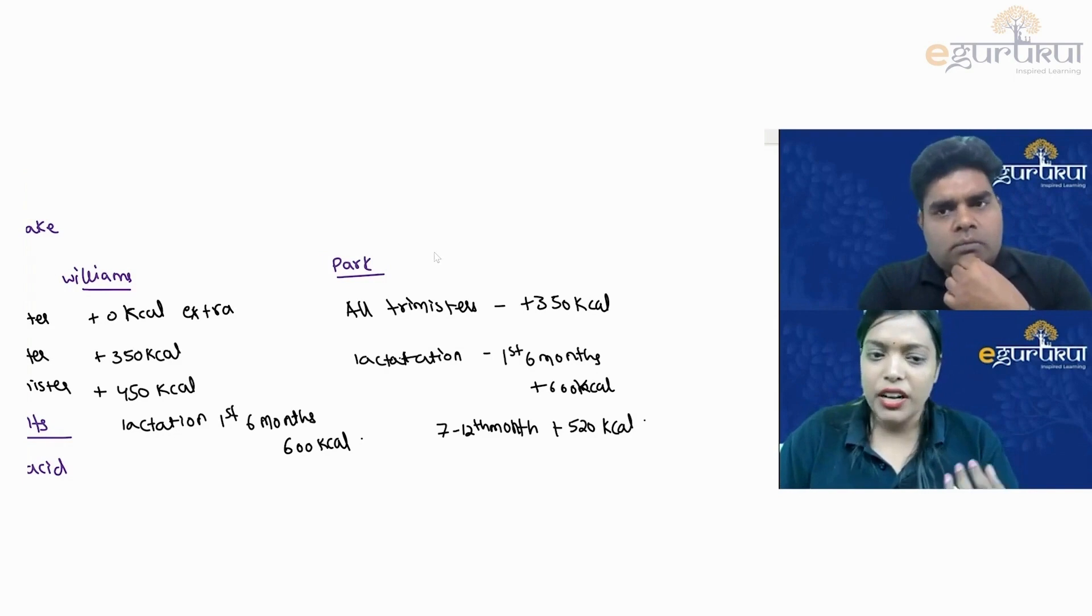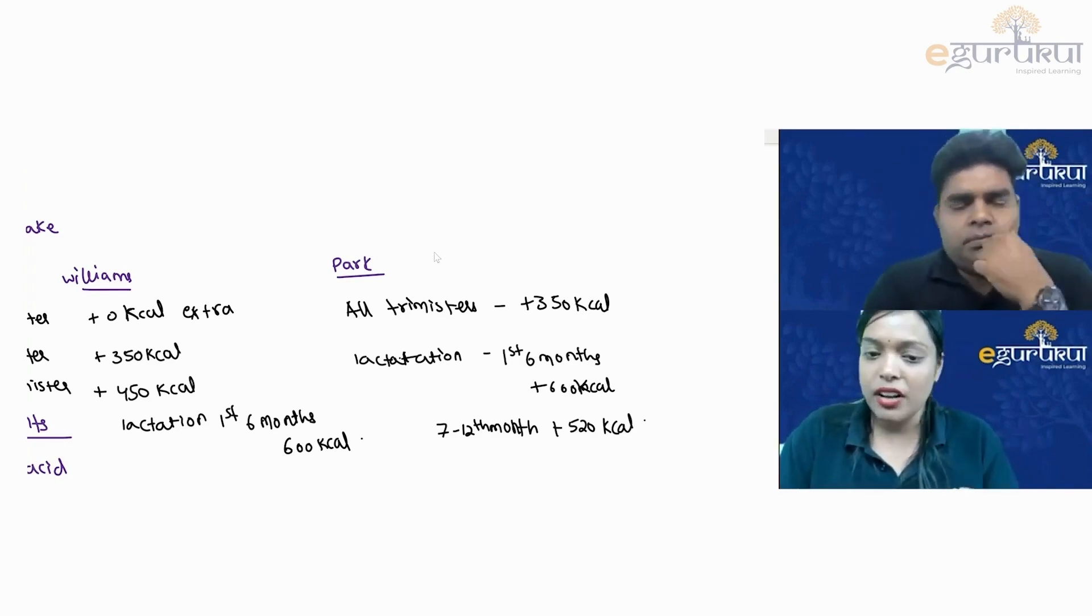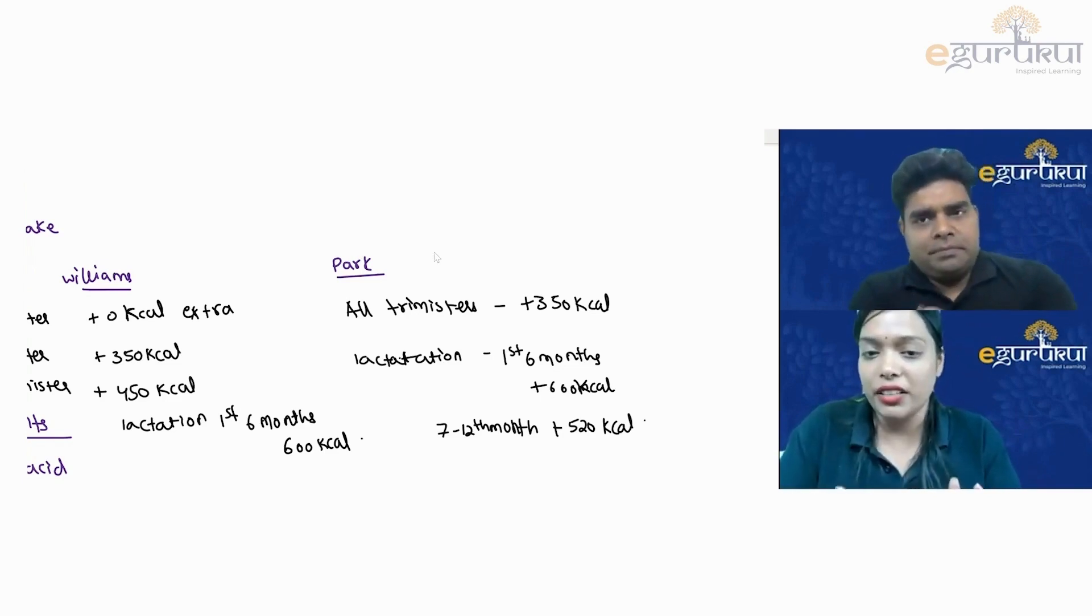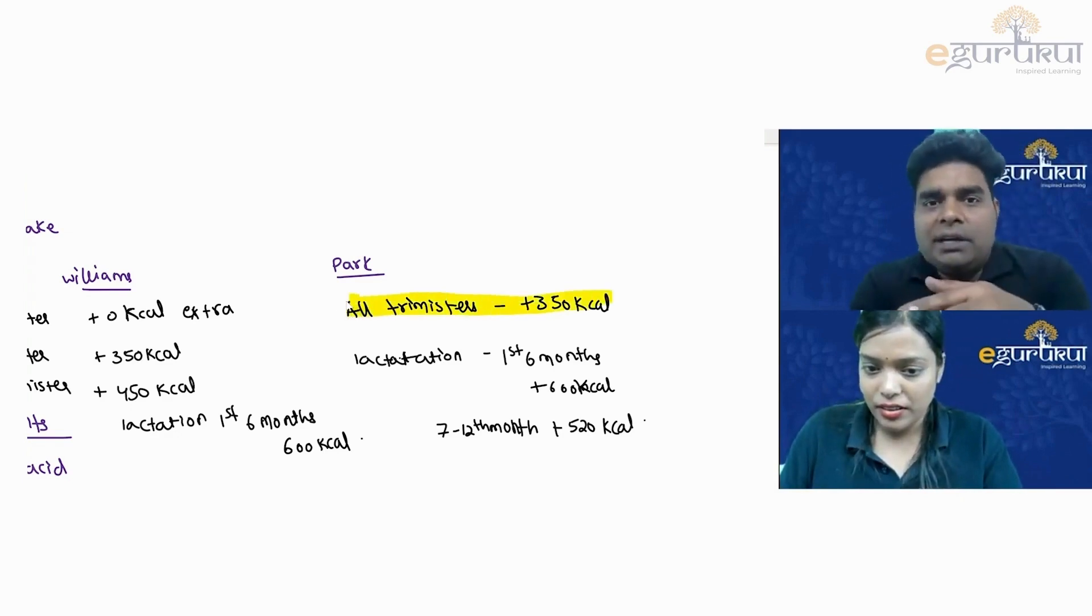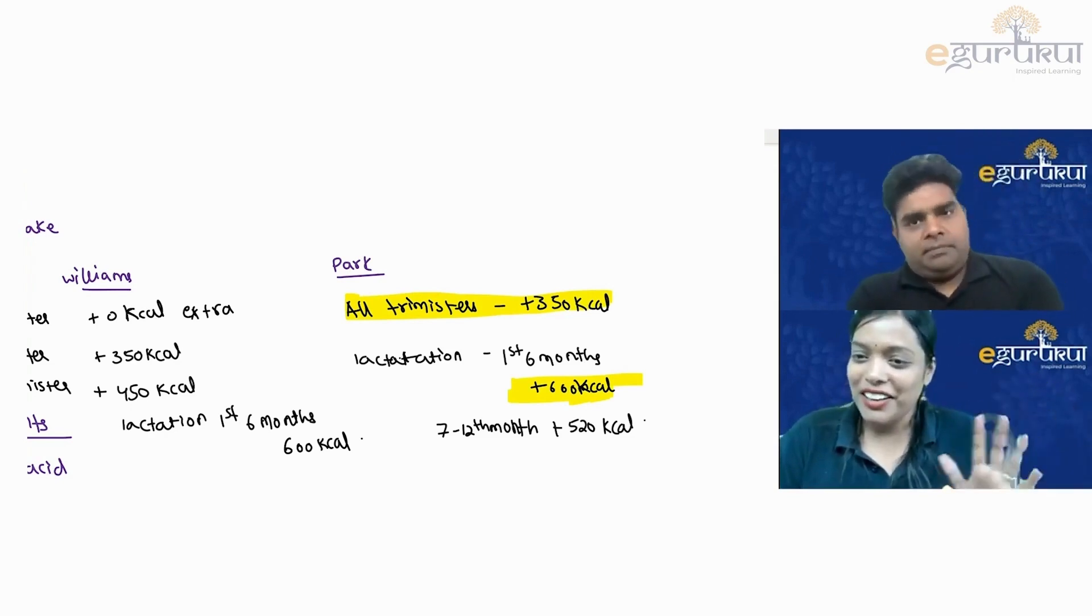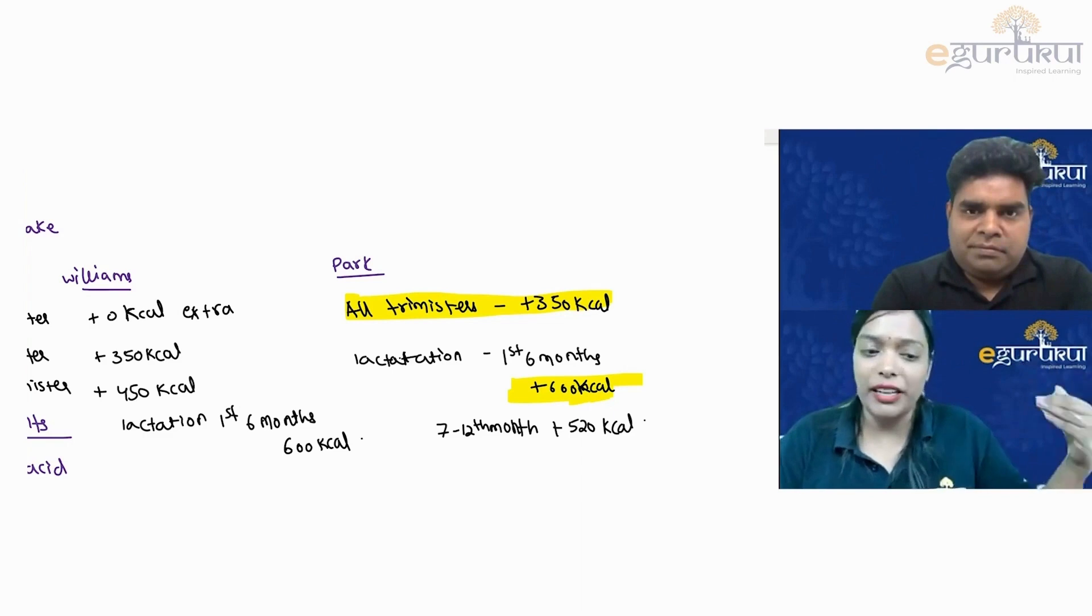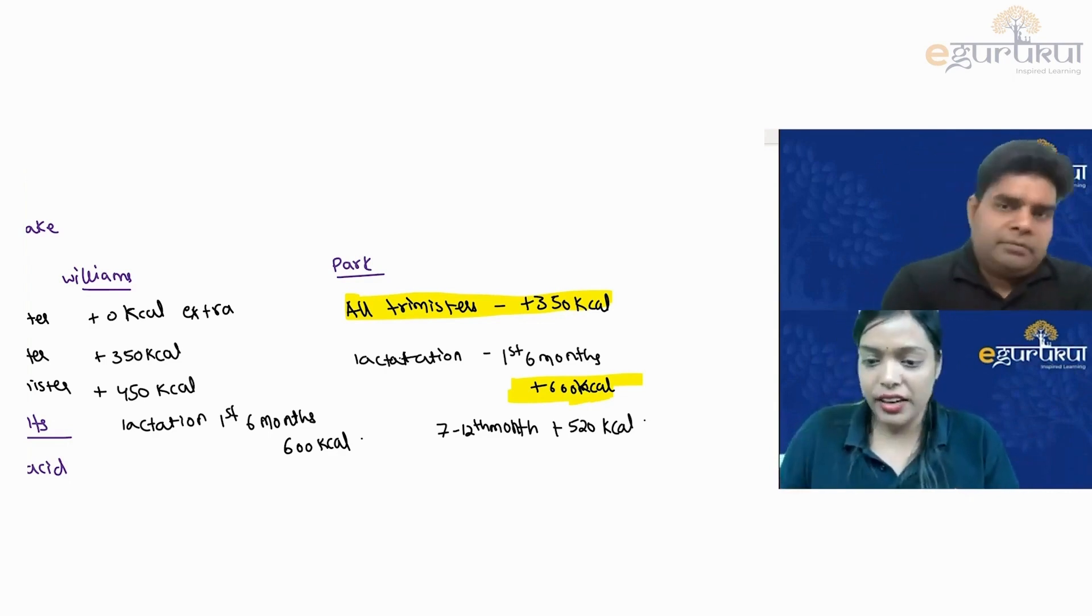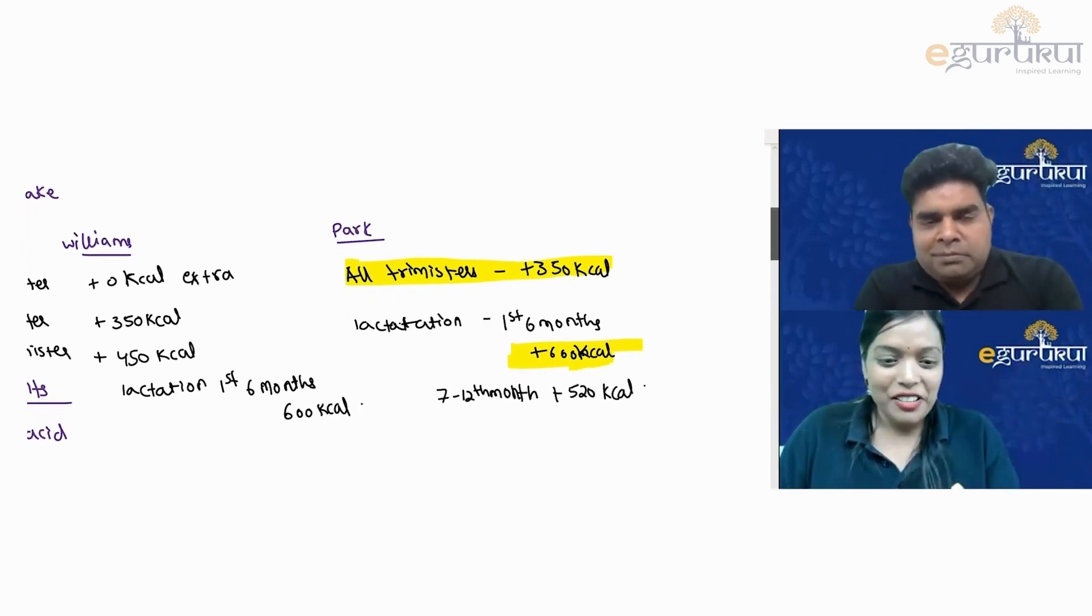I have not seen exam questions asking in the first trimester or second trimester or third trimester in particular. So if they ask you in pregnancy, what is the additional kilocalories or calories required, we can directly go with plus 350. If they ask directly in lactation without referring to the month, answer should be 600. That is the first controversy solved. If they ask you the requirement of calories in pregnancy, it is plus 350. Don't go with zero, plus 350, plus 450 unless they ask you specific trimester-wise. In pregnancy it is plus 350 kilocalories and first six months lactation plus 600 kilocalories.